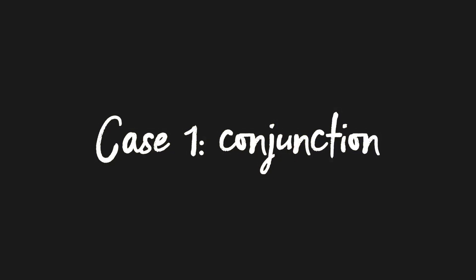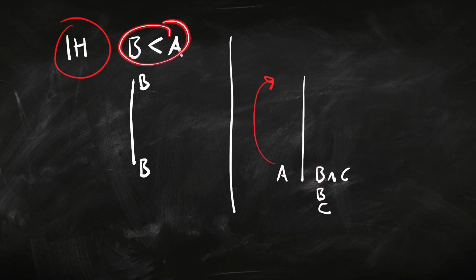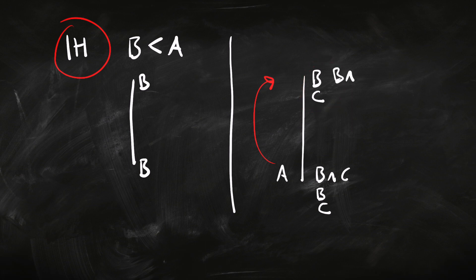First case: let's suppose that A is a conjunction, so it's got the form B and C. If B and C is verified down the bottom here, then we know that B is verified and also C is verified. Both of these sentences are less complex than A — they've got fewer connectives. So we've got sentences less complex than A, and our induction hypothesis says if it's down the bottom, then we can put it up the top. By that reasoning, we can put B up the top, and similarly we can put C there. So up the top we've got a B and a C, so we can add B and C. That was the sentence we were interested in. So if A is a conjunction, then A is going to be up the top too.